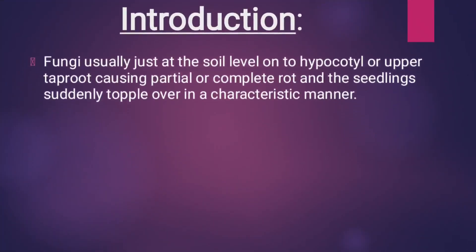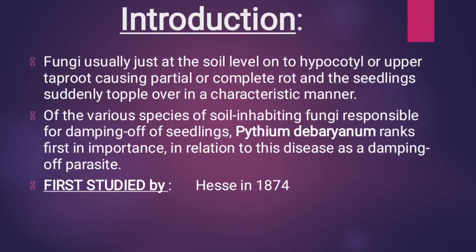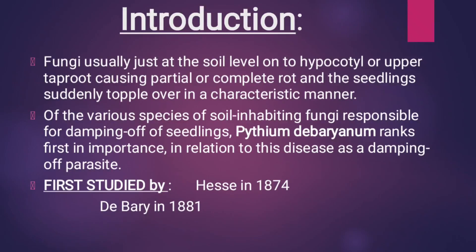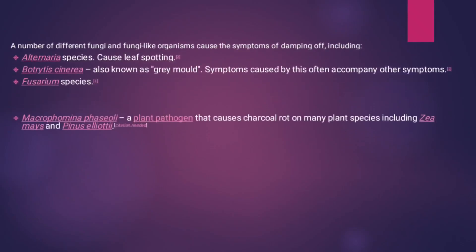Introduction: it is basically a fungal disease of the soil, affecting the hypocotyl or upper tap root, causing partial or complete collapse of the seedling at the soil level. The soil-inhabiting fungi responsible for the damping-off disease — a seedling disease — include Pythium debaryanum. This disease was first studied by Hartig in 1874, and later on it was studied by De Bary in 1881.